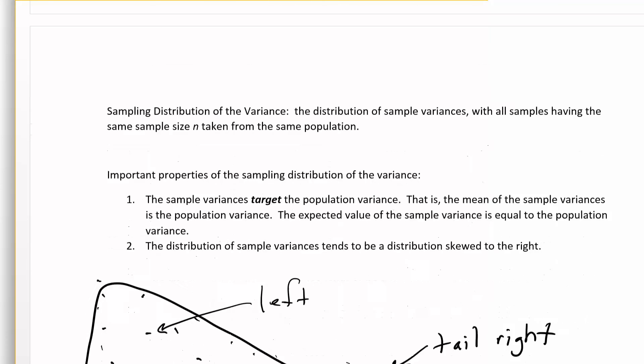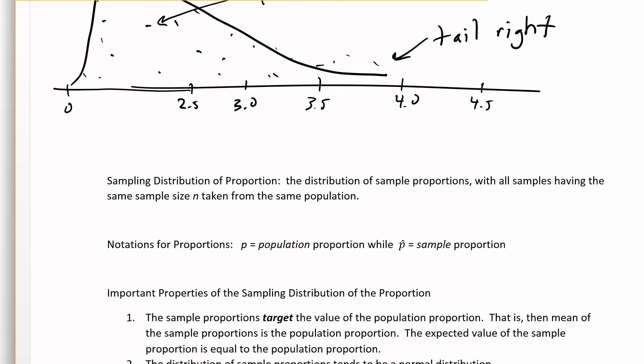We've looked at means and variances. Now let's look at proportions. The sampling distribution of a proportion is the distribution of sample proportions with all samples having the same sample size n taken from the same population. P is the population proportion, and P-hat — a P with a little hat on top — is our notation for a sample proportion. We'll do a lot more with P-hat values as the class progresses.